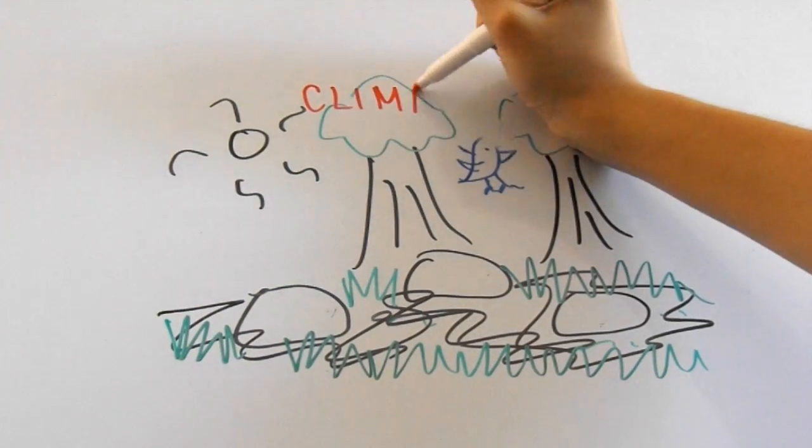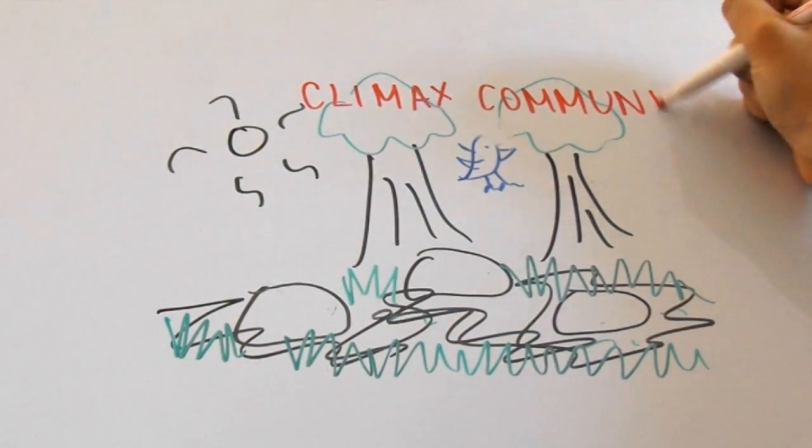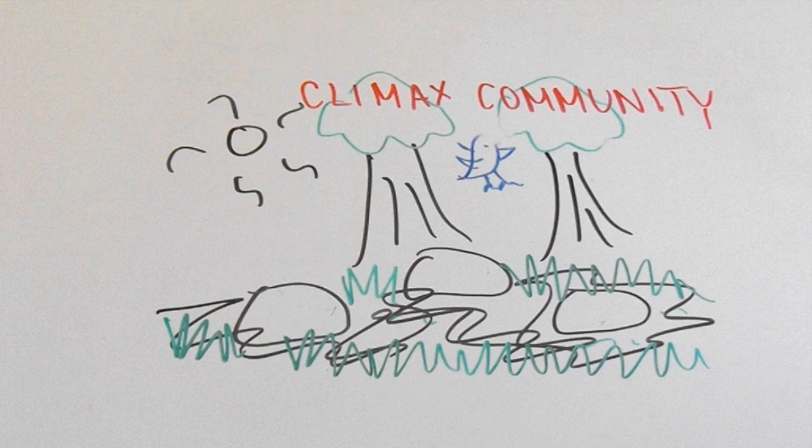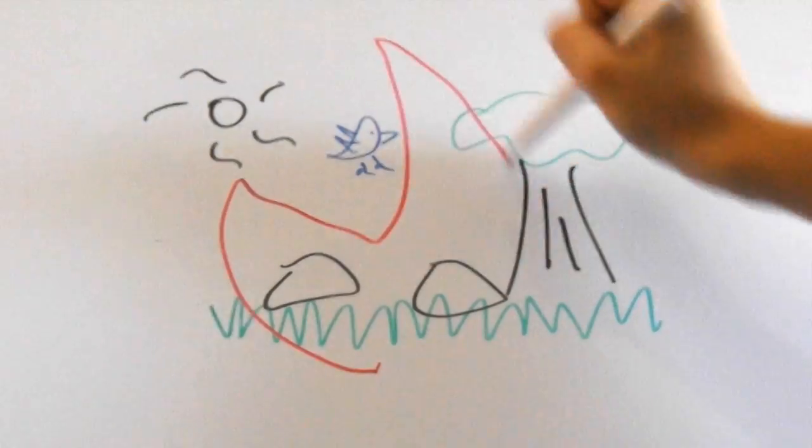We use the term climax community to describe the final state that the community is in after succession has taken place, which stays until something happens which destroys the entire area again like a fire or a flood.